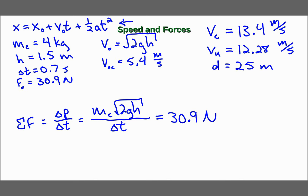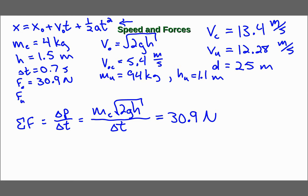We can do the same thing for Usain Bolt. His mass is about 94 kilograms, and his vertical leap is about h_Usain equals 1.1 meters. Assuming the same 0.7-second jump time, that gives a force of 624 newtons.